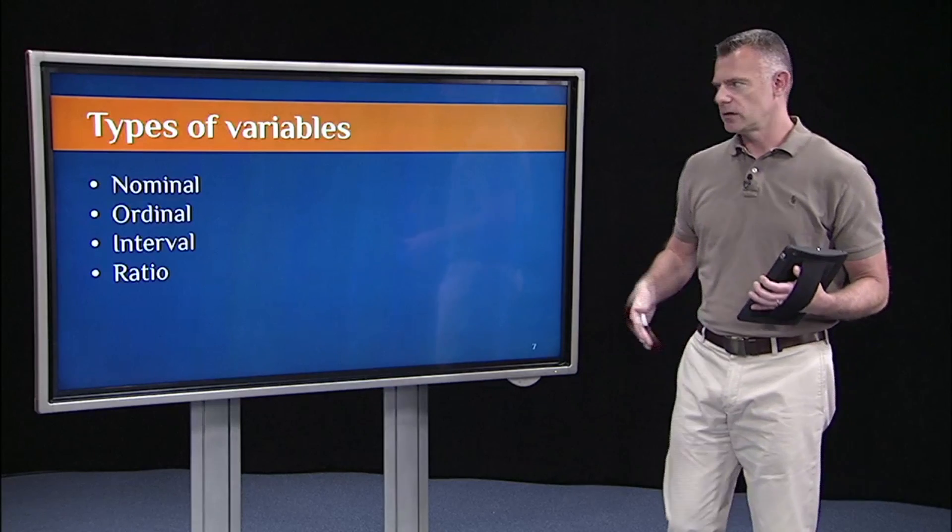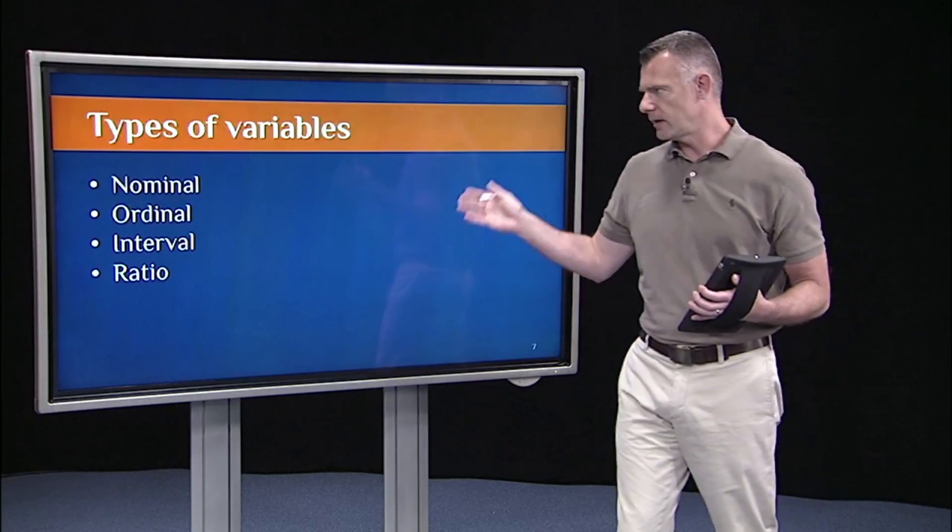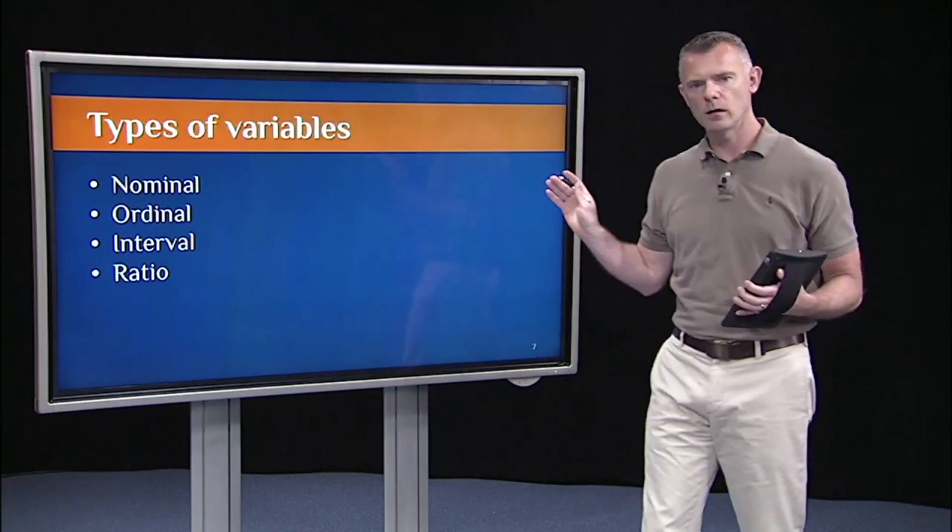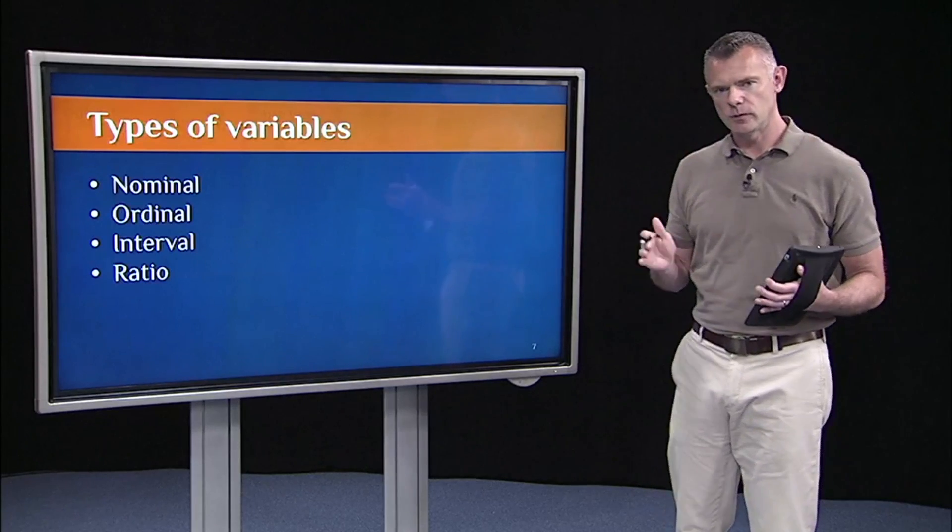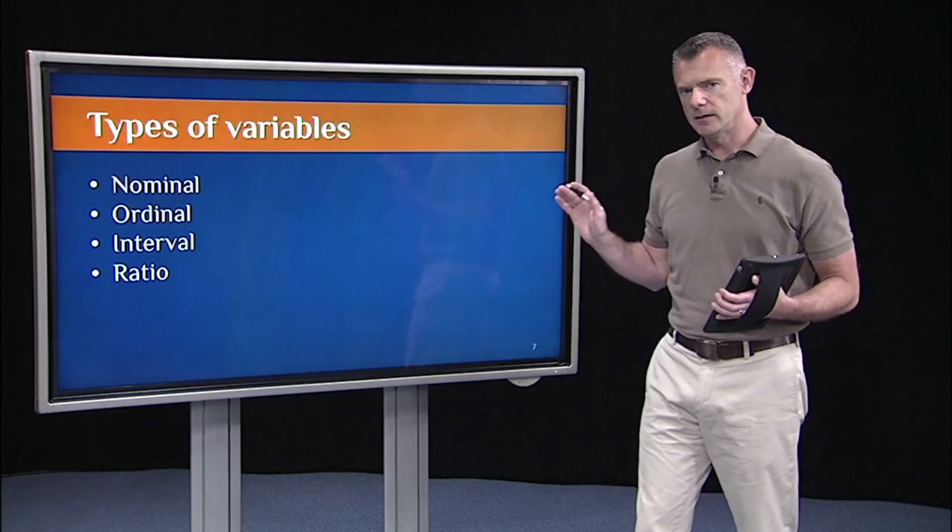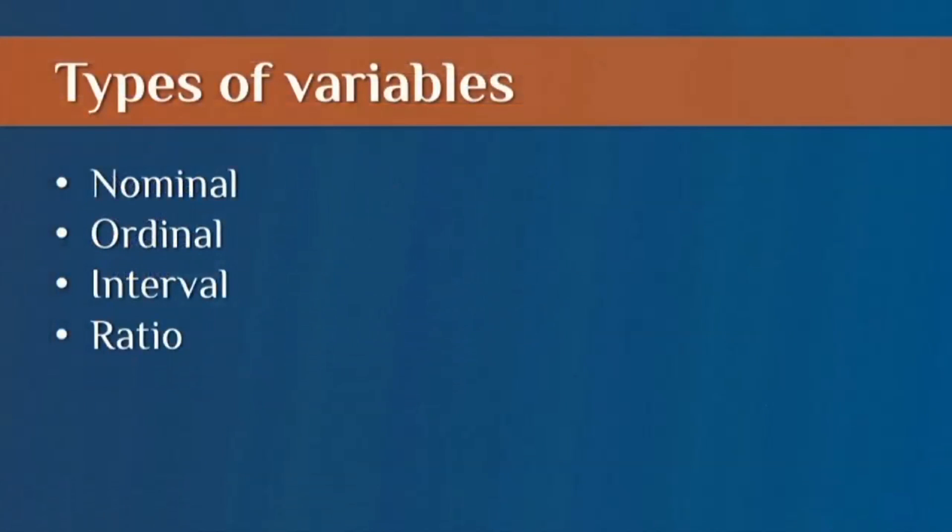In statistics, it's common to classify variables into four distinct kinds. I'm going to follow suit with that tradition. The four kinds are nominal, ordinal, interval, and ratio.